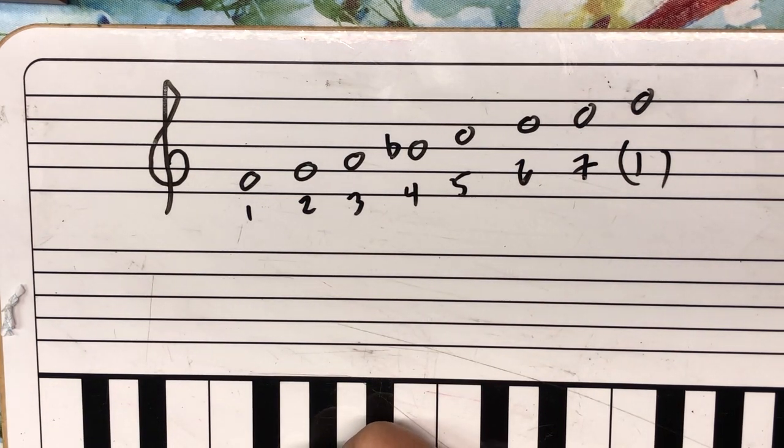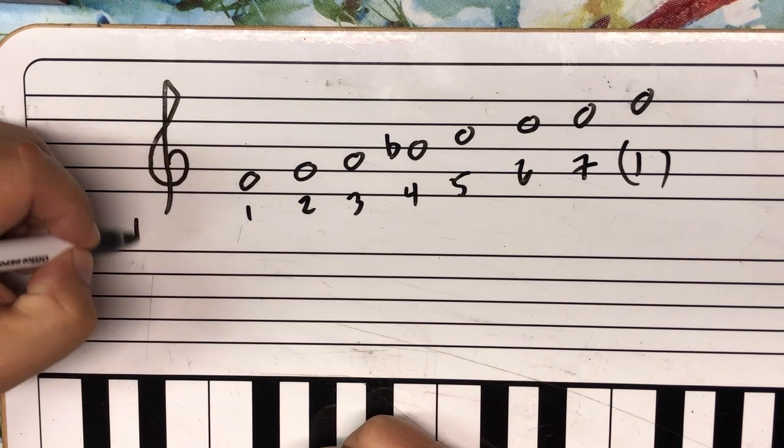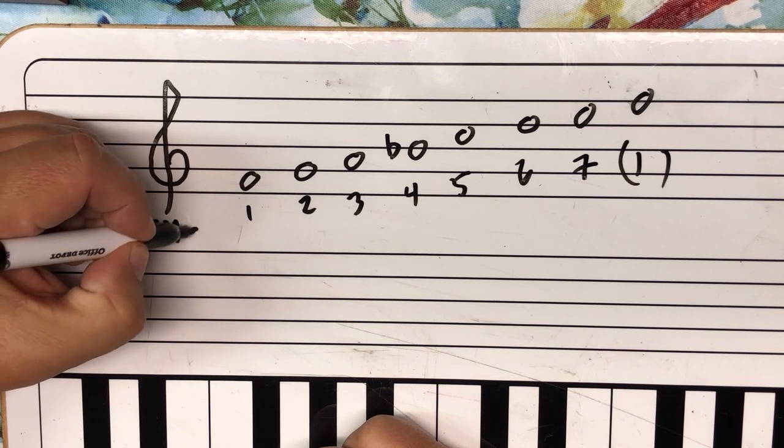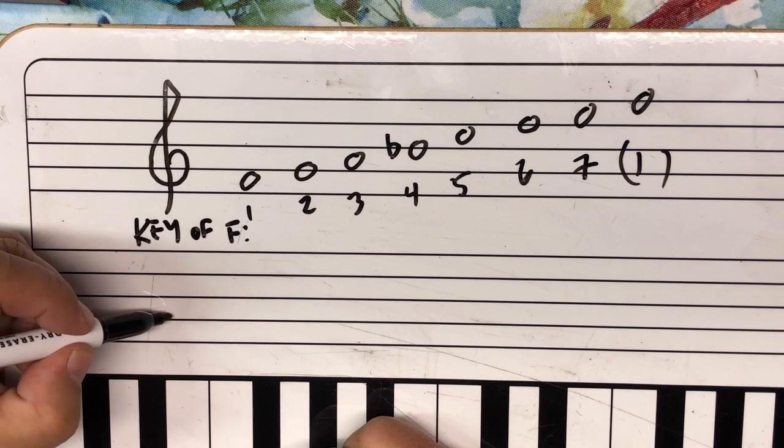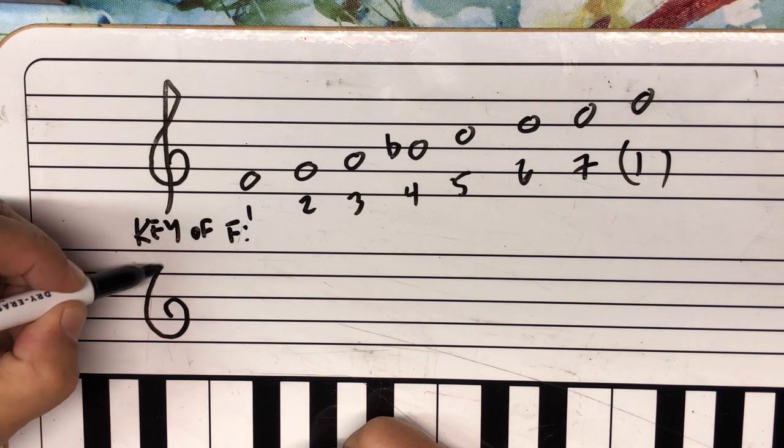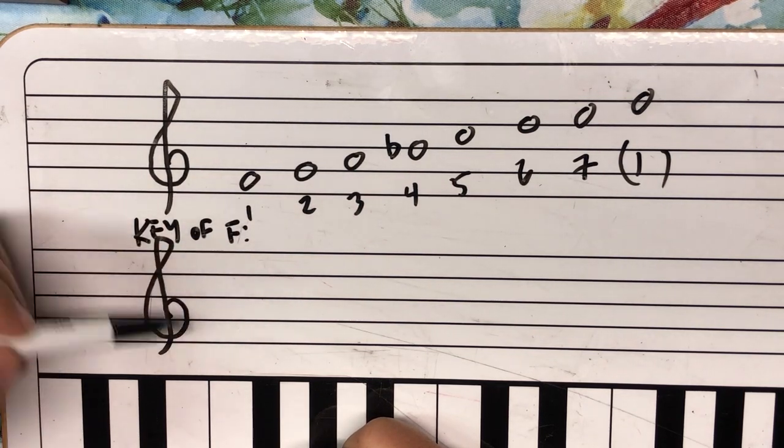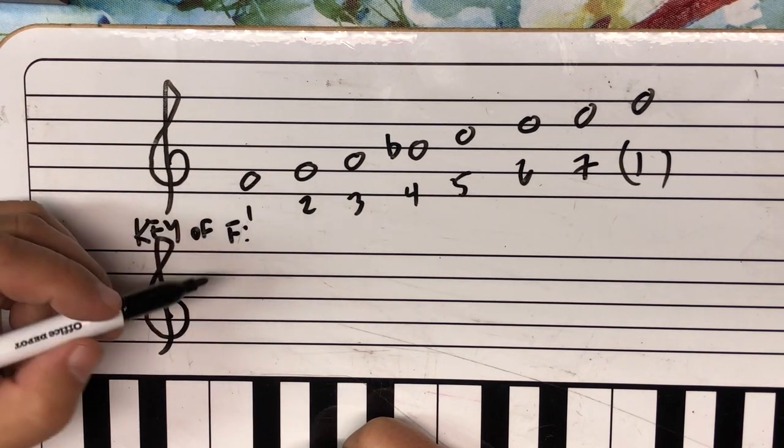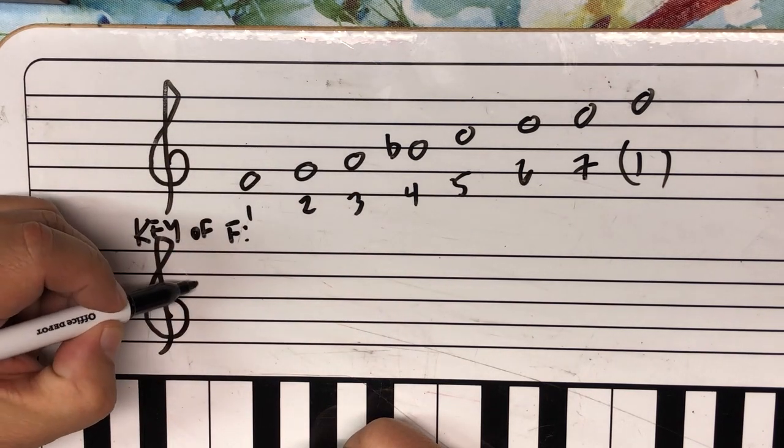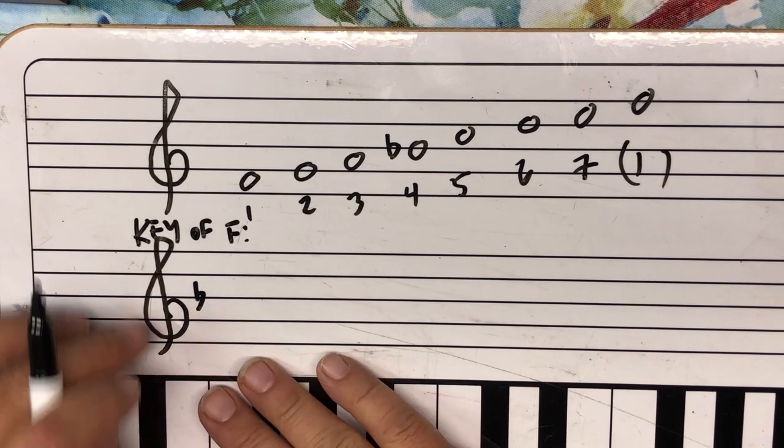And if we were using this for a song, then we would say, since we're using the F major scale, that we are in the key of F. And if you actually saw a piece of music written in the key of F, it would actually have a key signature. It means that at the very beginning of the line here, it will index what's flat or sharp. And since it has one flat, B flat, you'd see that right there.